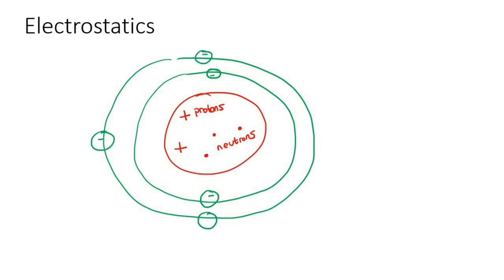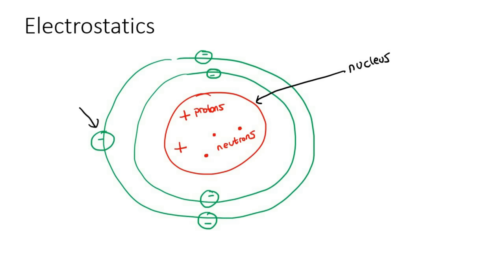We've looked at it in quite a few chapters. Let's just remind ourselves once again that this big red part, which has the protons and the neutrons, is called the nucleus, and these parts on the outside are called electrons.